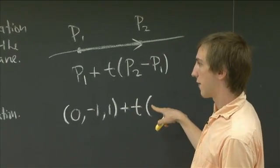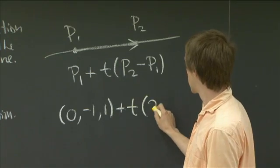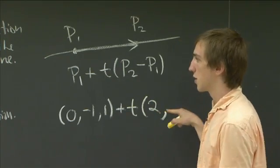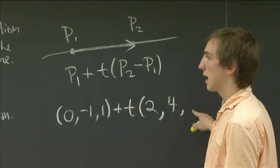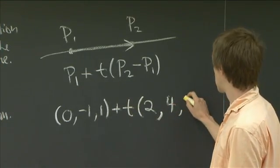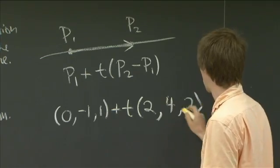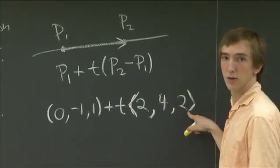So we have 2 minus 0 is 2. 3 minus a negative 1 is 4, and 3 minus 1 is 2.